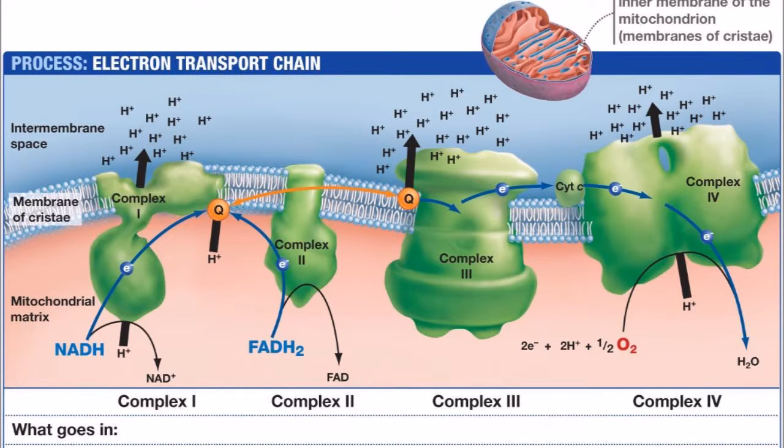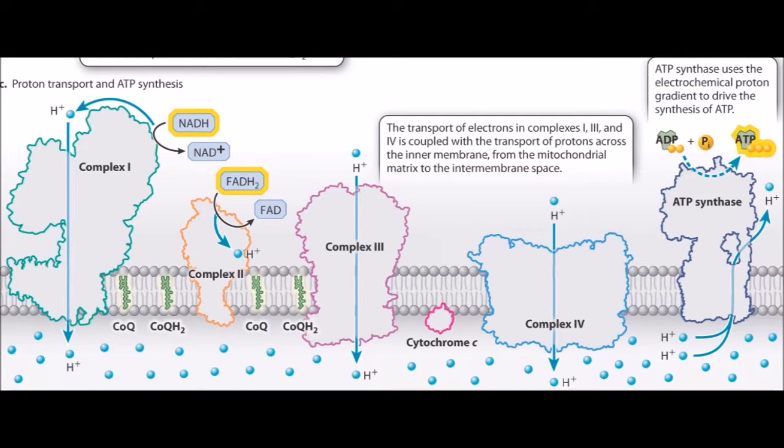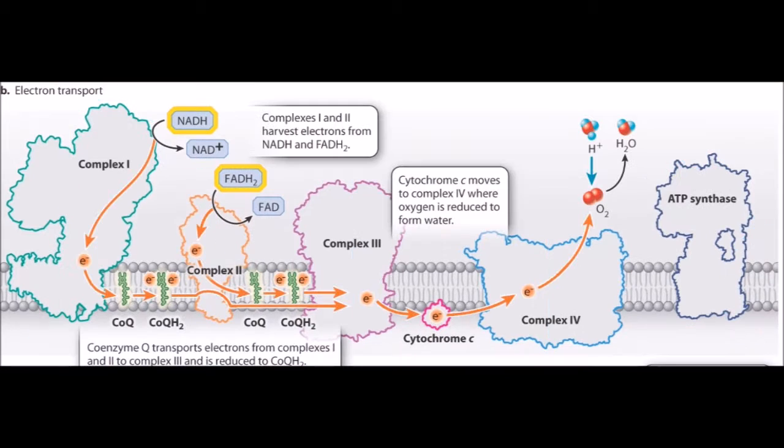To be more specific, electrons must be transported between four complexes. Coenzyme Q accepts electrons from complexes 1 and 2. It is then reduced to CoQH2, and it transfers electrons to complex 3. Complex 3 transfers the electrons to cytochrome C. Cytochrome C is reduced when it accepts an electron and diffuses in the membrane and interacts with complex 4.